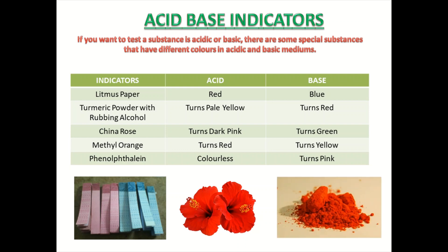Similarly, methyl orange — when you add methyl orange in acidic solution, it will turn red in color. And when it is added to basic solution, it will turn yellow in color. Specially, one more indicator is phenolphthalein — it is also colorless in acid and turns pink in base.